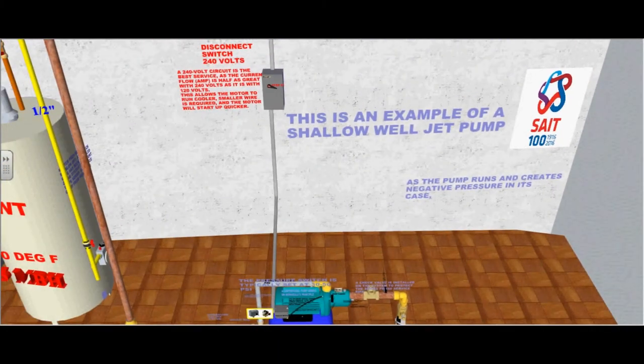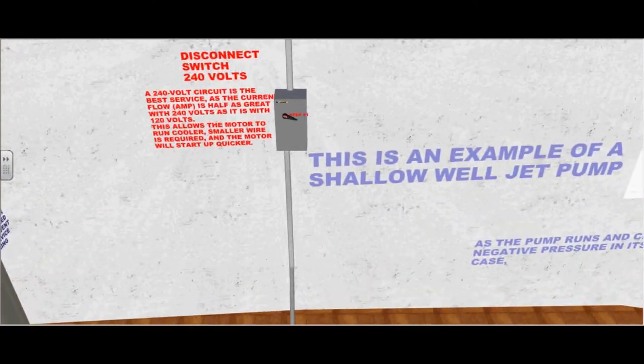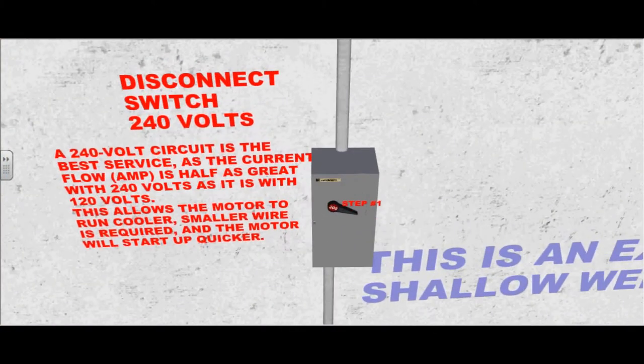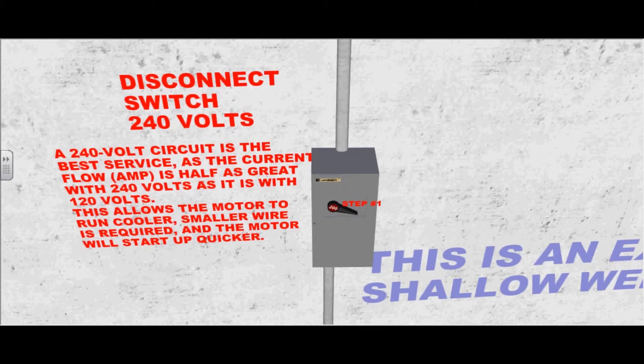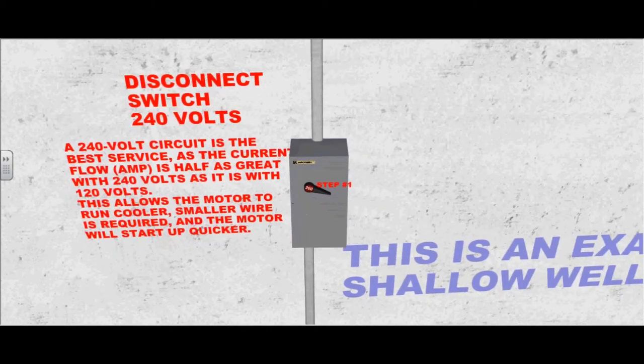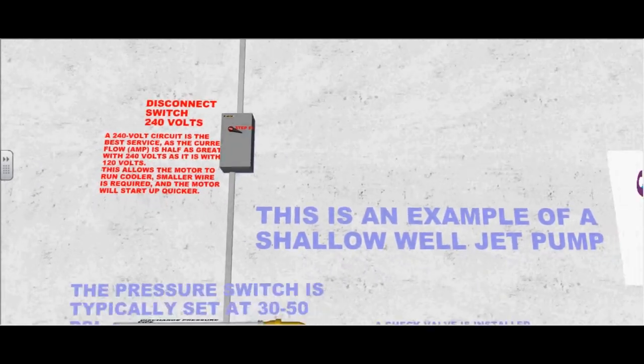This is our disconnect switch. It is ideal to use 240 volts as you get better amperage. This allows the motor to run cooler. Smaller wiring is required and the motor will start up quicker.